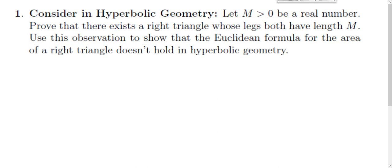Two things to prove in this screencast. One: let M be some positive real number. We'll prove that there exists a right triangle whose legs both have length M. Use this observation to show the Euclidean formula for the area of a right triangle does not hold in hyperbolic geometry.